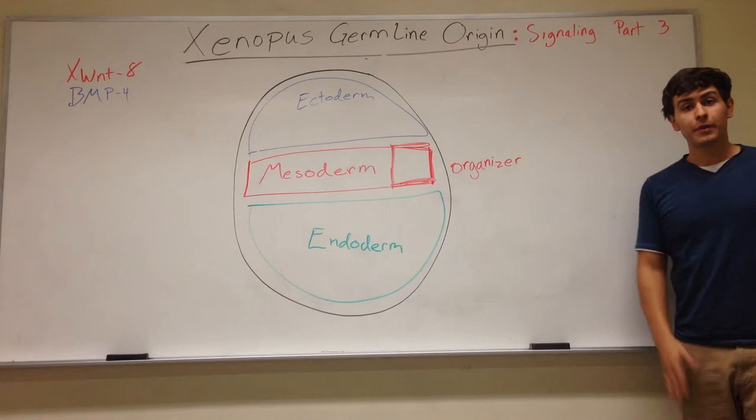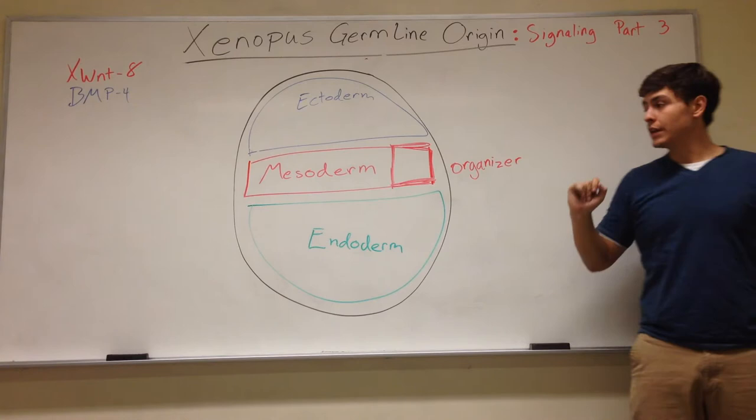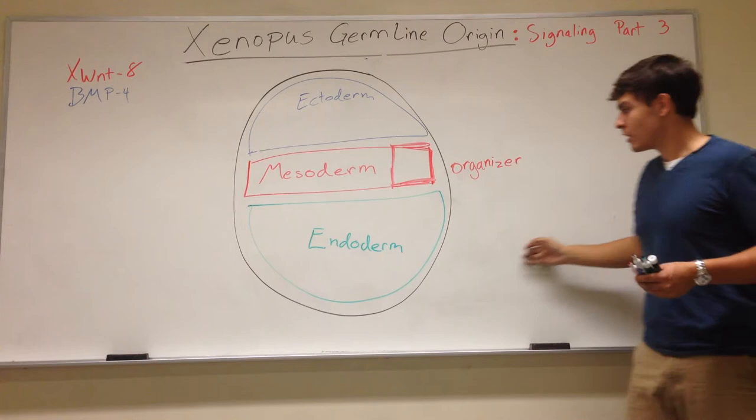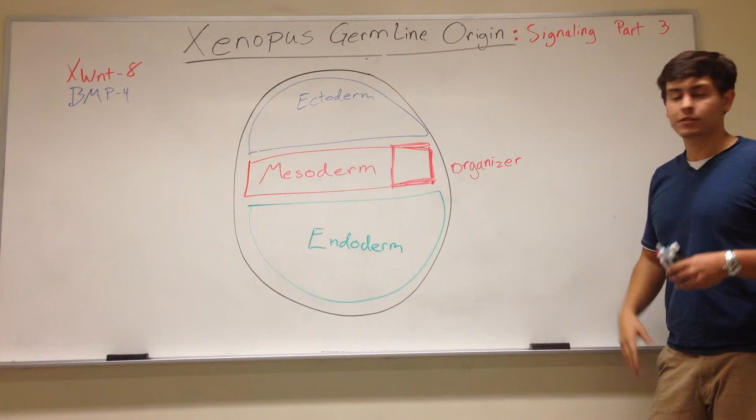Hello everyone, my name is David Eberts and we're going to be looking into the germline origin signaling part 3, which will lead to the neural induction and the mesoderm differentiation. From the previous videos we see that the endoderm, mesoderm, and ectoderm got formed because of different factors such as VegT, Veg1, Ectodermin, etc.